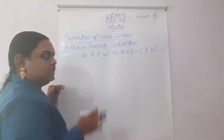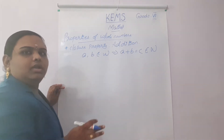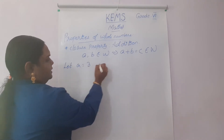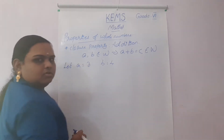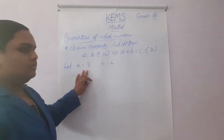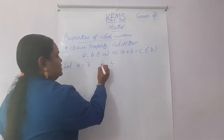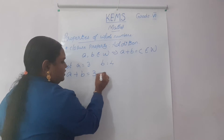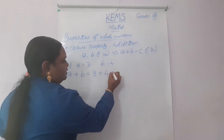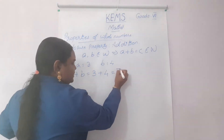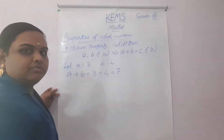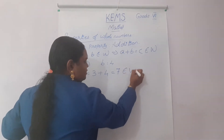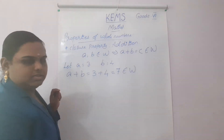Let's check with A equal to 3 and B equal to 4. A plus B equals 3 plus 4, which is 7. 7 is a whole number, so it belongs to W, where W defines whole numbers.